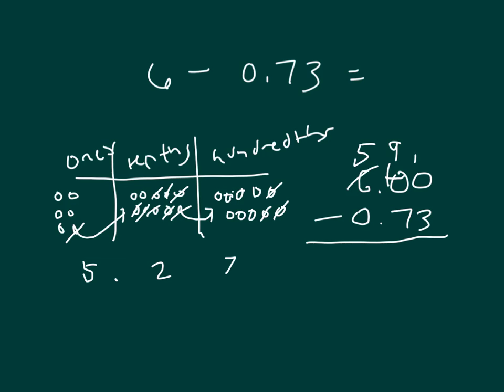10 minus 3 is 7, 9 minus 7 is 2, and 5 minus 0 is 5. So that's our work to be able to show that whole number 6 minus the decimal number 0.73 seventy-three hundredths.